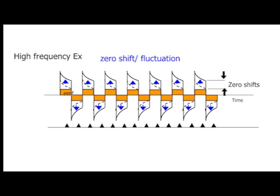On the other hand, in the high frequency excitation method, the excitation frequency is fast and the sampling rate is fast, so the induced noise does not have a chance to dissipate. In high frequency excitation methods, the zero point is more likely to be unstable.